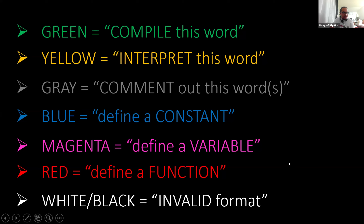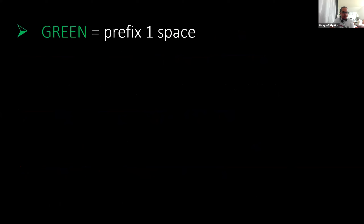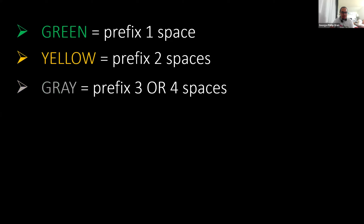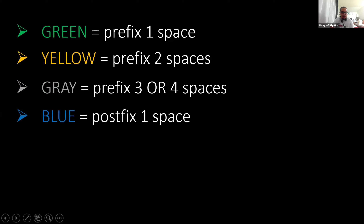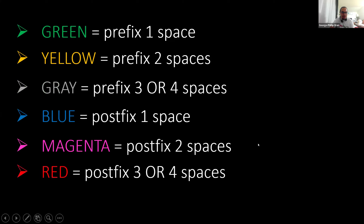I ask people to inform me if a white word occurs. How are the colors represented in text files like ASCII? The approach I use is like indenting in Python — it counts the spaces. For green, there is a prefix of one space. For yellow, two spaces. For gray, three or four spaces. For blue, postfix one space, meaning after blue comes a green word. Magenta uses postfix two spaces, so after magenta comes yellow. Red uses postfix three or four, so after red comes a gray comment.